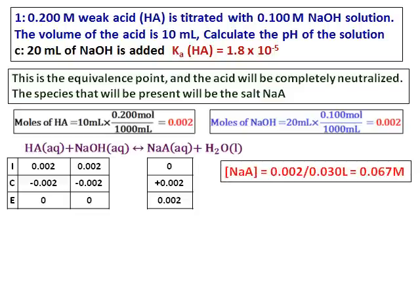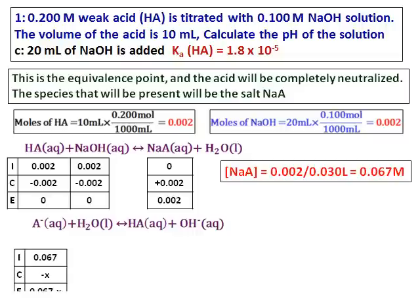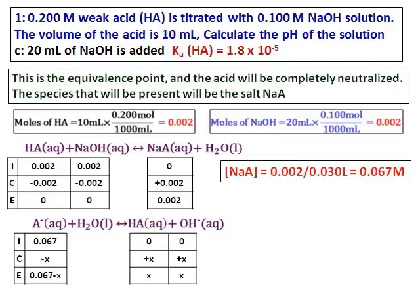Since I am not going to use the Henderson-Hasselbalch equation, I will convert the moles of the sodium salt into concentration by dividing by the total volume. The total volume is 30 mL, so the concentration of NaA comes to 0.067. After getting the concentration, write down the reaction of this salt with water: A minus with water gives HA plus OH minus.